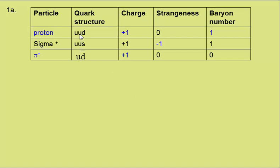The first particle consists of an up-up-down quark, which is a proton. We know that has a charge of plus 1. And having three quarks, it is a baryon, so has a baryon number of 1.